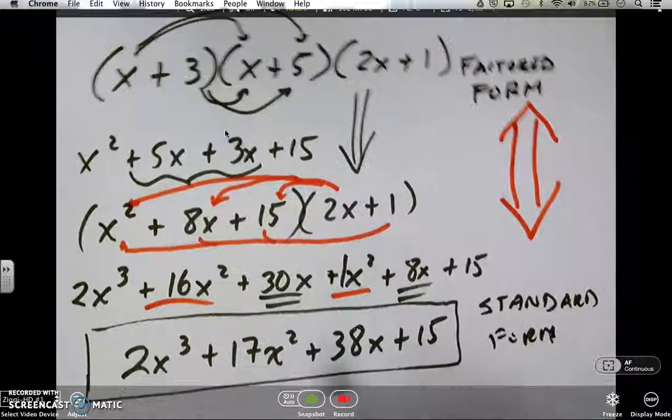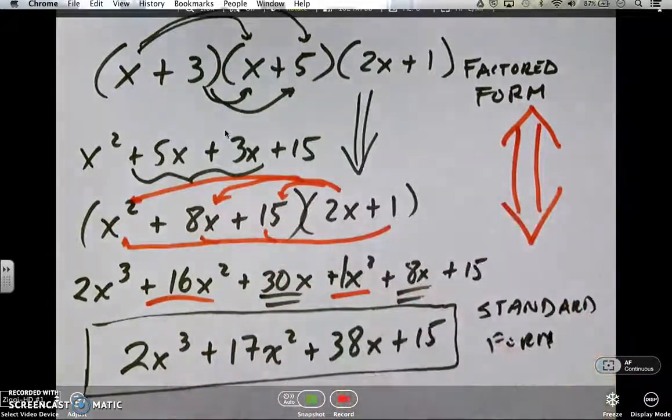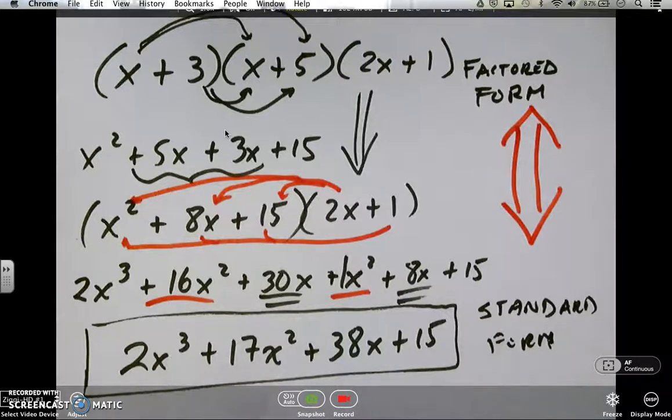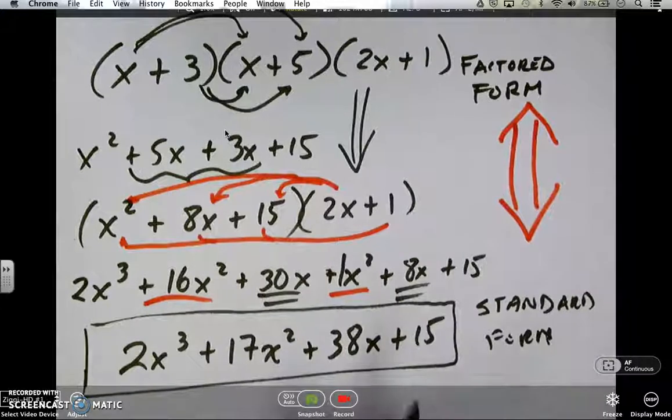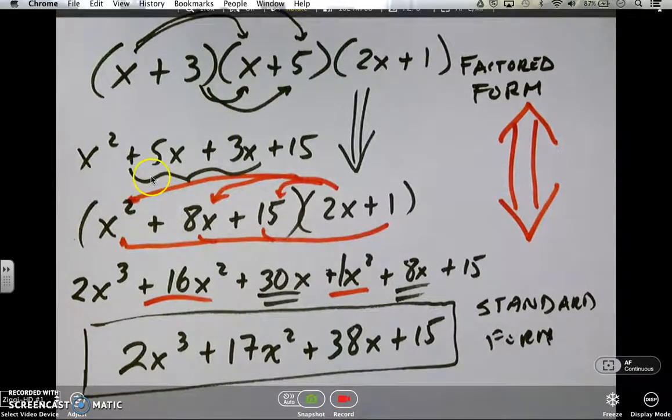If it's given to you factored, foil it out to get standard. If it's given to you standard, take that and reverse this. We have not learned the reverse process, but that's sort of where we're going with this. So you know.